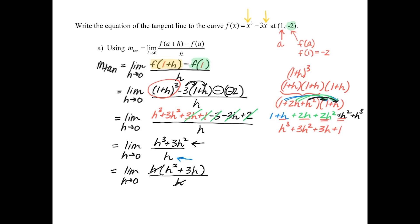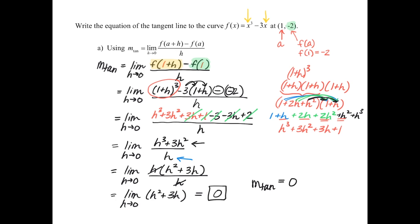The h's divide out, and we're left with a nice polynomial. We can do direct substitution to evaluate this limit. Substituting 0, we get an output of 0. So we have just found that the slope of the tangent line at the point is 0. Think about what a line looks like if the slope is 0.